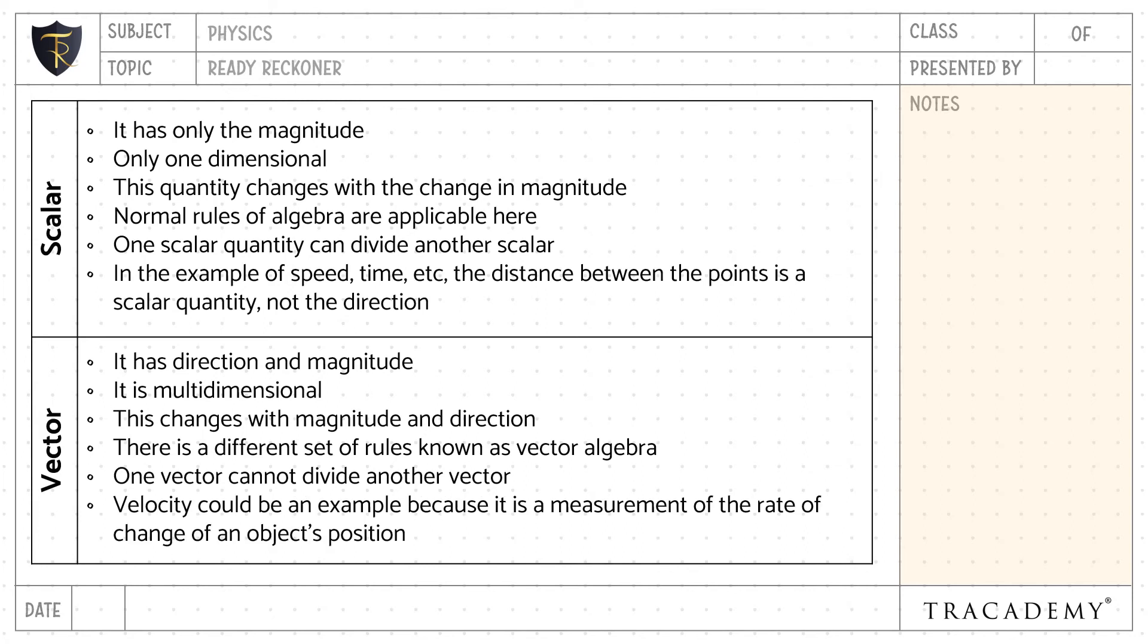Velocity is an example of a vector quantity because it is a measurement of the rate of change of an object's position.